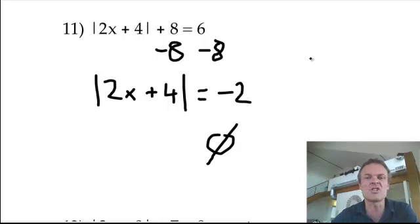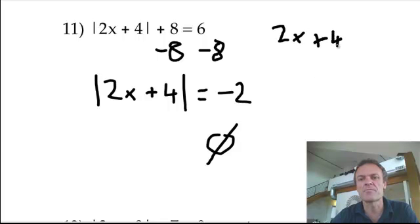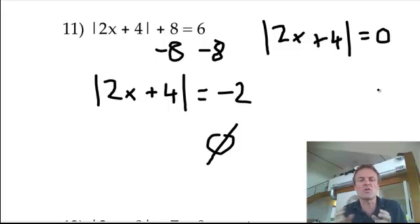By the way, if you get something like 2x plus 4, okay, inside an absolute is equal to 0, then of course, you can solve it, but you're only going to get one answer.